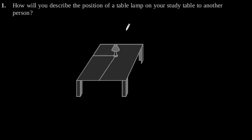Considering this figure which shows a table lamp on study table. Now consider this lamp as a point and the table as a Cartesian plane.